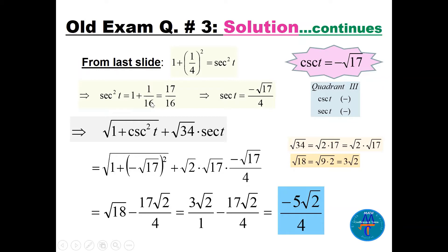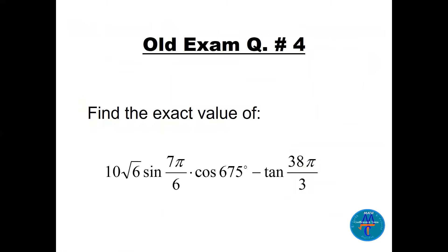Now we compute the required expression involving √(1 + csc²(t)). Substituting csc(t) = -√17: √(1 + 17) = √18 = 3√2. With sec(t) = -√17/4, we combine: -√17·√2 / 4 gives -√34/4 from one term, and 3√2 with appropriate signs gives -5√2/4 as the final answer.